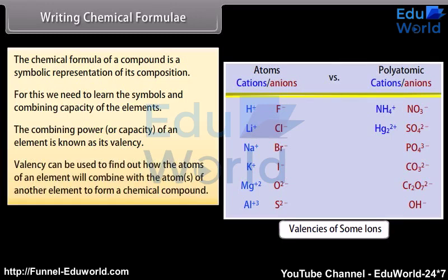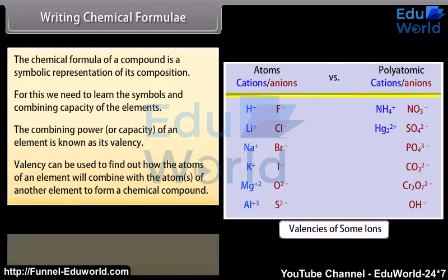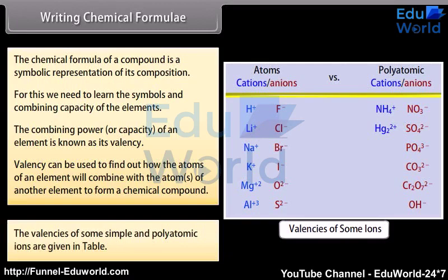Valency can be used to find out how the atoms of an element will combine with the atoms of another element to form a chemical compound. The valencies of some simple and polyatomic ions are given in table.